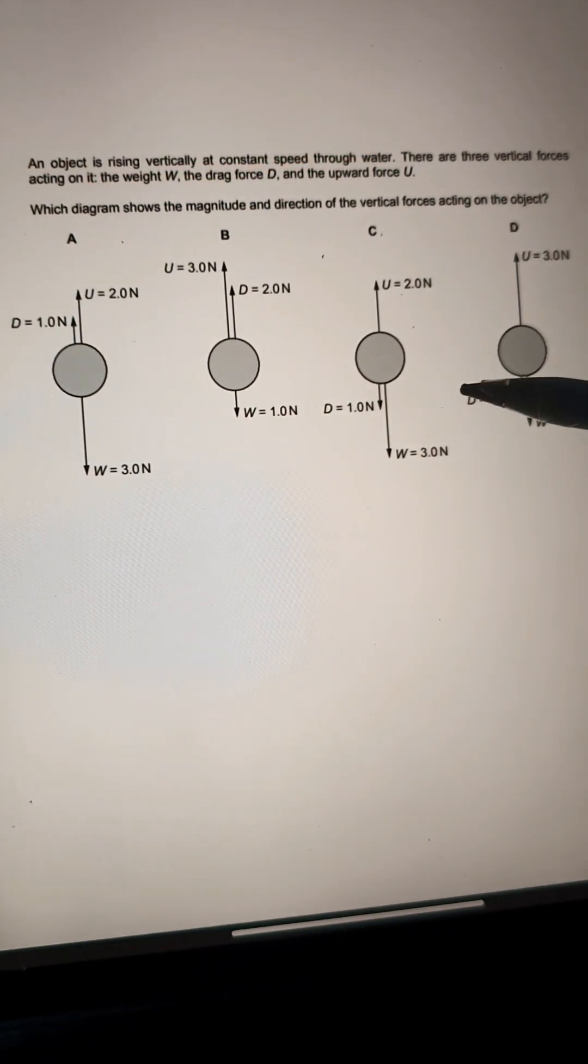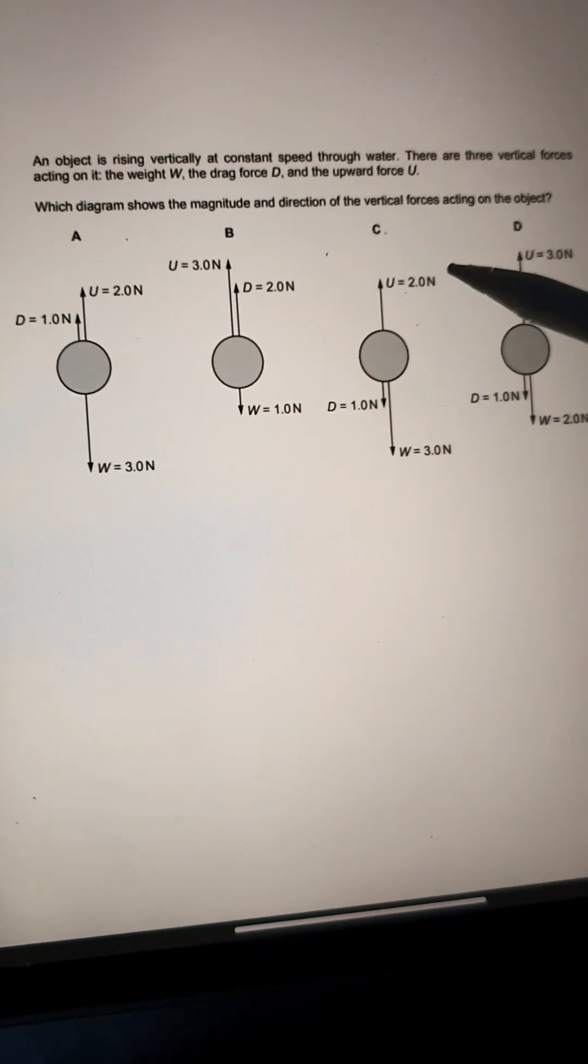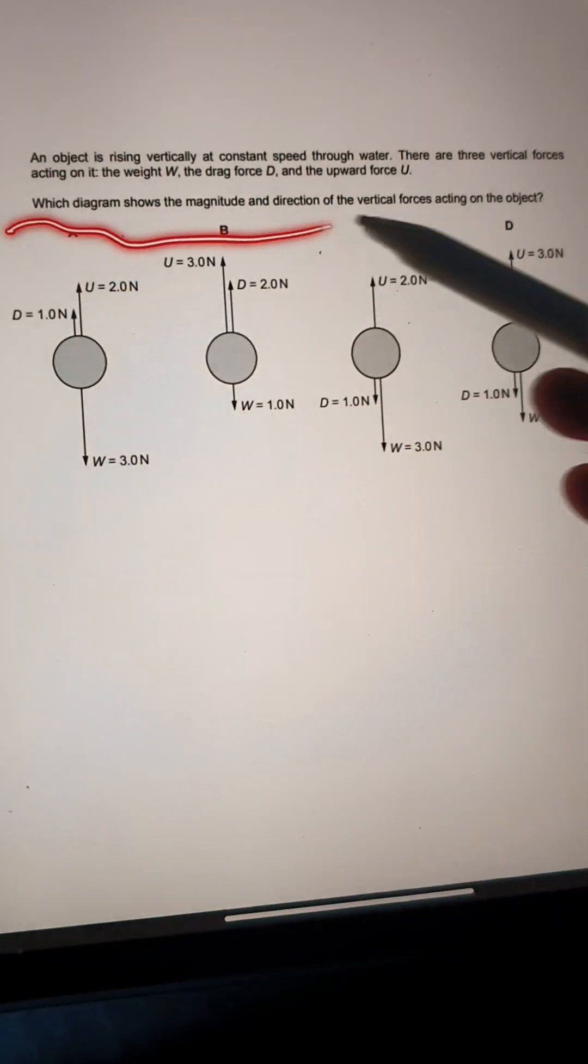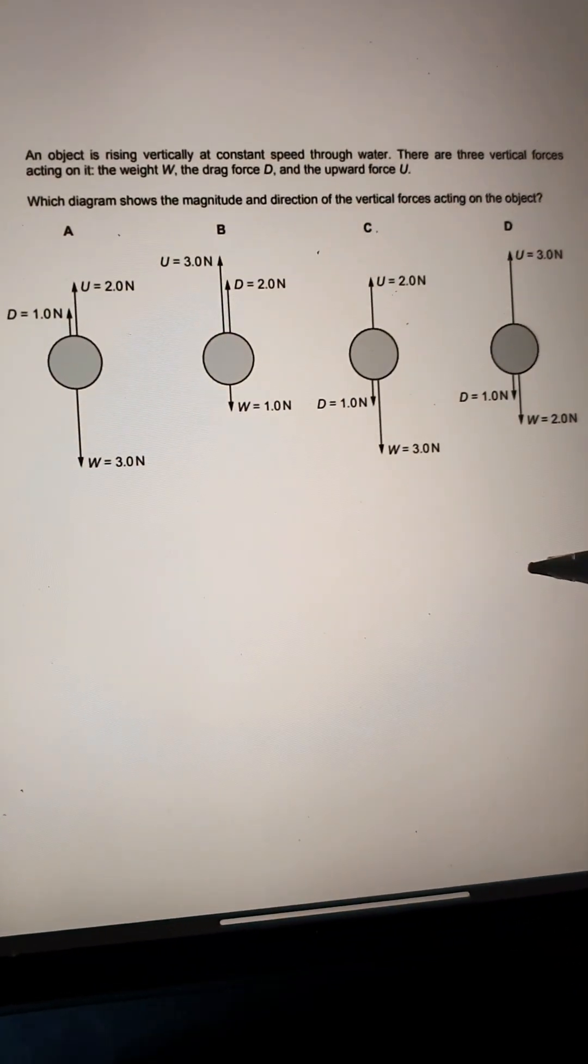When an object is rising vertically with constant speed through water, 3 vertical forces are acting on it. Which diagram shows the magnitude and direction of these vertical forces acting on the object?